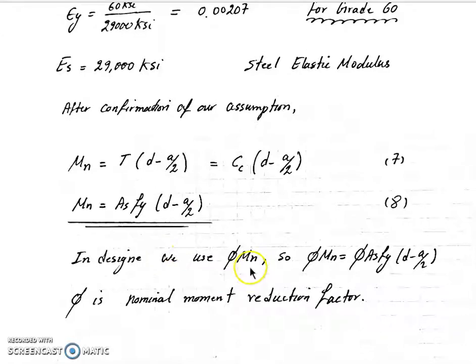In design, we use phi Mn, where phi is the nominal moment reduction factor. So our phi Mn is equal to phi As fy times d minus a over 2.